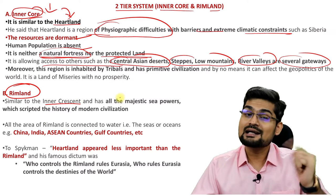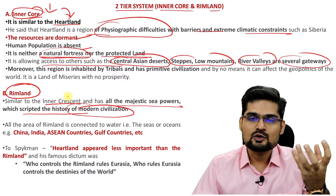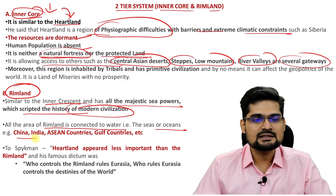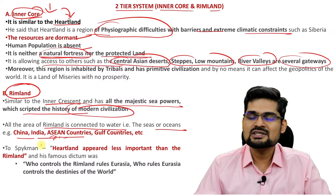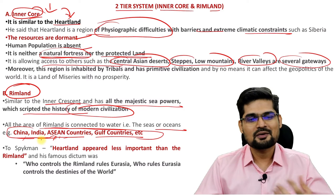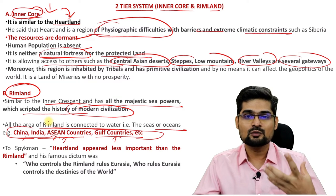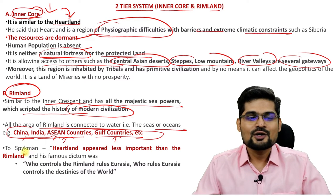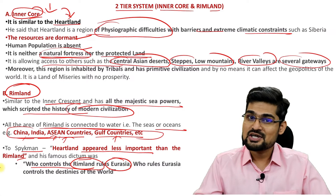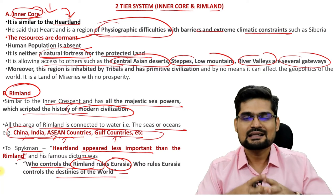He kind of disqualified the heartland as being more important; rather, he focused on his rimland. Similar to the inner crescent in heartland theory, all the majestic sea powers that scripted the history of modern civilization have to be in control of the rimland. The area of rimland is connected to water — the seas and oceans — that is China, India, Asian countries, ASEAN nations, and Gulf countries. His famous dictum was: who controls rimland rules Eurasia, and who rules Eurasia is destined to rule the world.